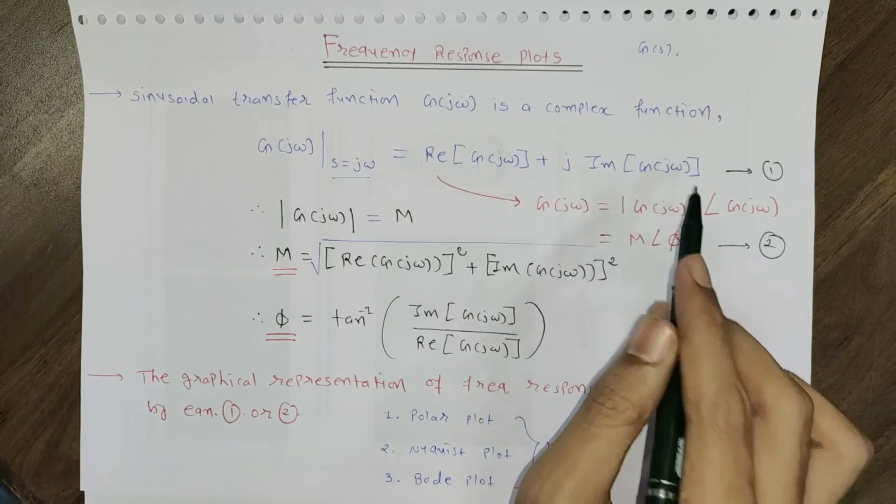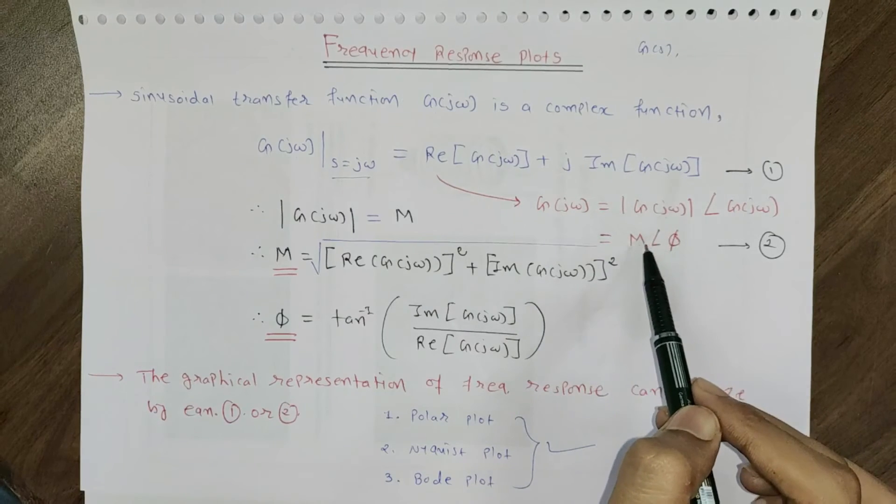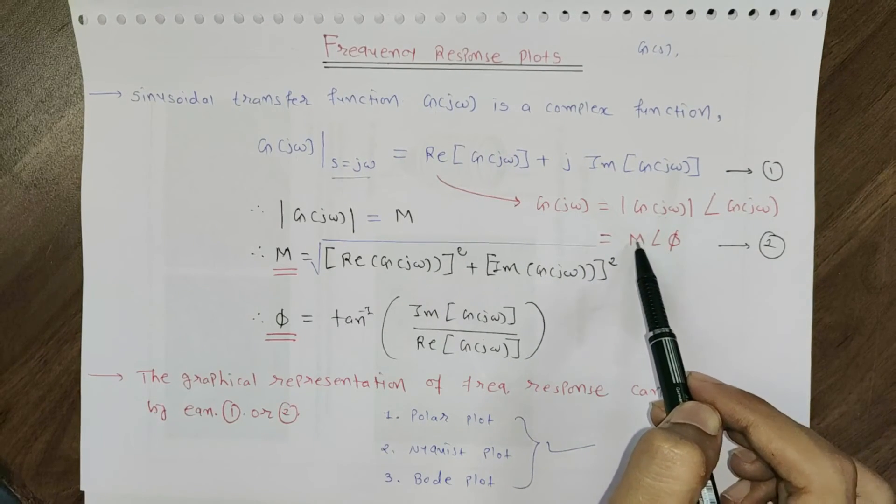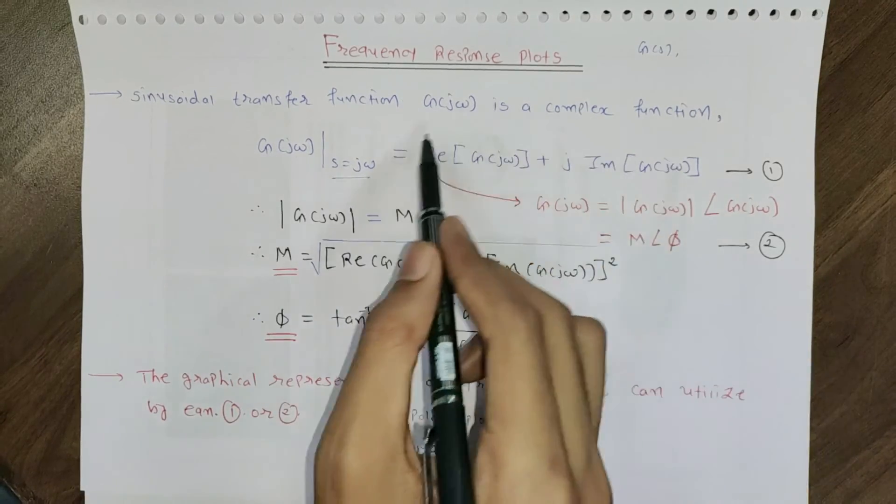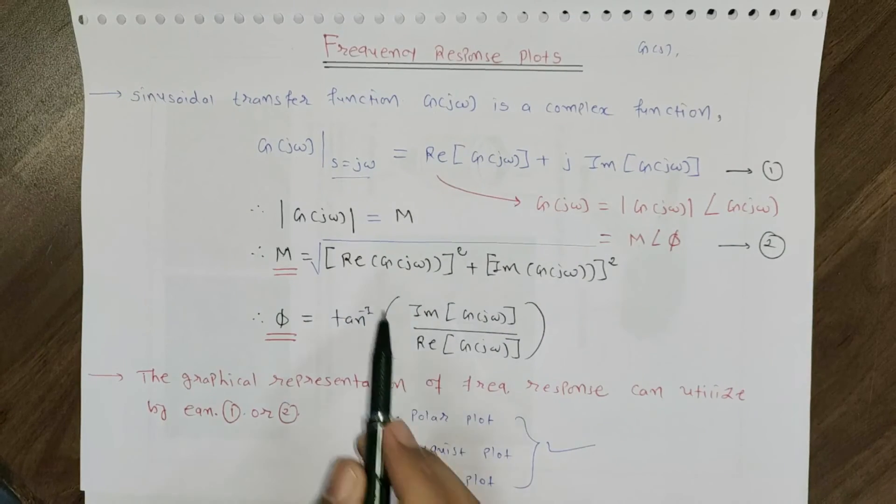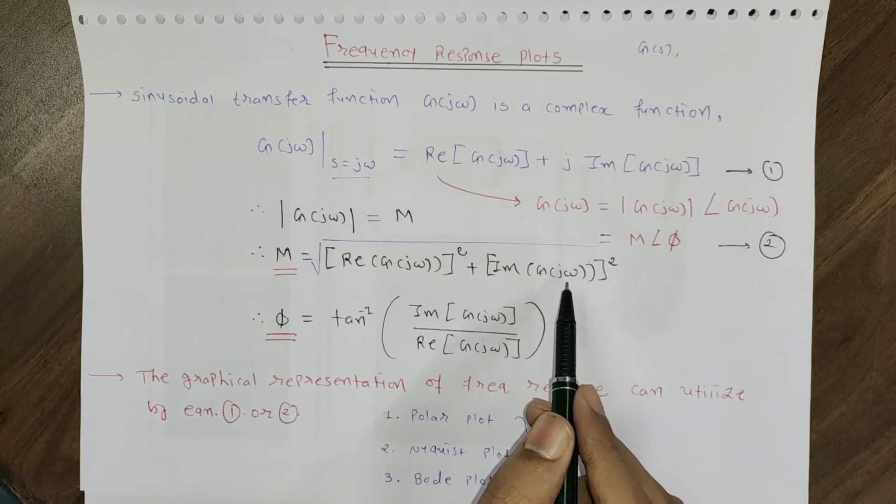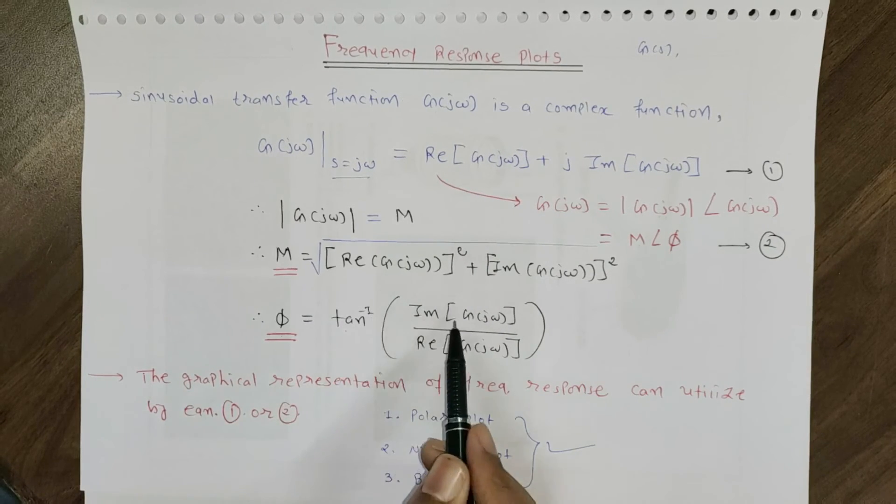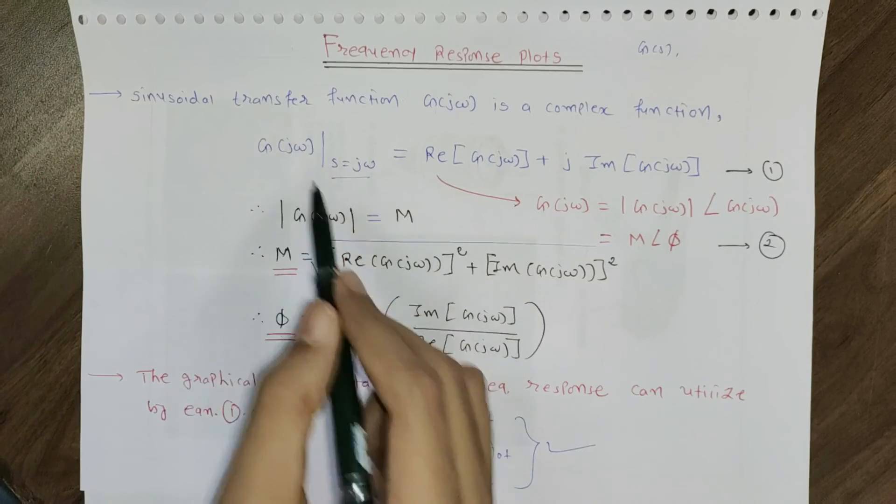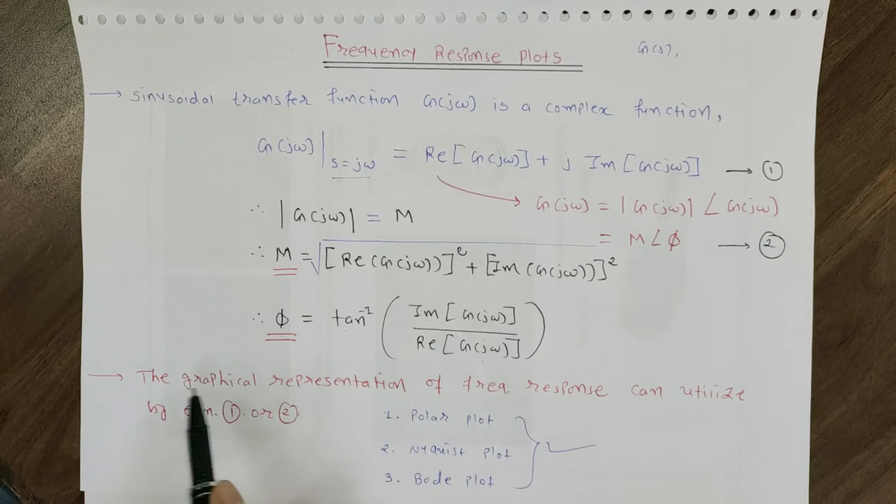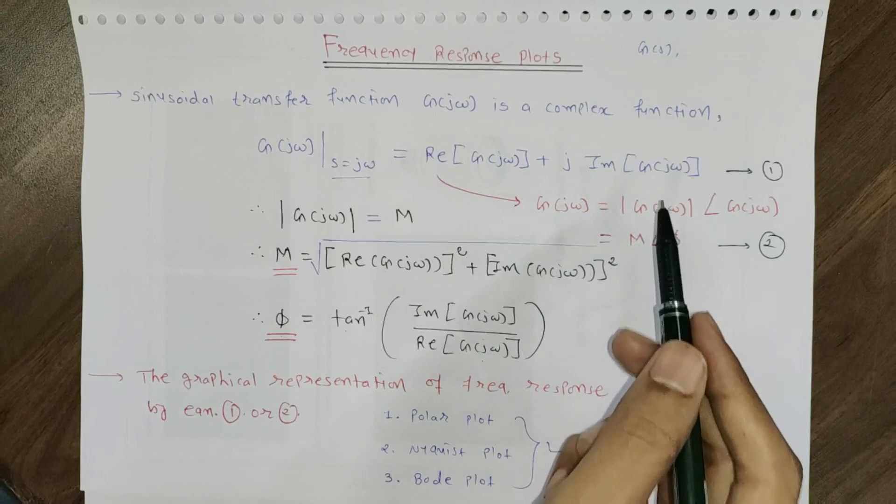There are two ways to simplify our transfer function. First way is right here, and second way is M at an angle phi. Where M is the magnitude, the square root of square of real part plus square of imaginary part. The value of phi is tan inverse imaginary part of G J omega over real part of G J omega. The graphical representation of frequency response can be utilized by both of these equations.